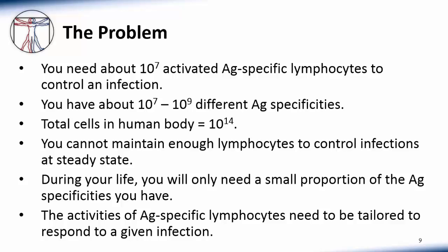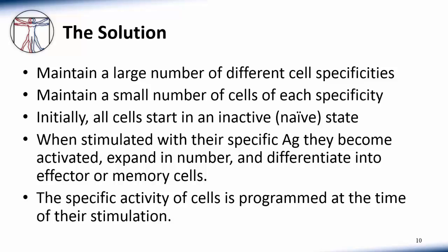During your life, you will only need a small proportion of the antigen specificities that you have. Also, the activities of antigen-specific lymphocytes need to be tailored to respond to a given infection. The solution is that you maintain a large number of different cell specificities, but maintain a small number of cells of each specificity. Initially, all cells start out in an inactive or naive state. When stimulated with their specific antigen, these cells become activated, expand in number, and differentiate into effector or memory cells.